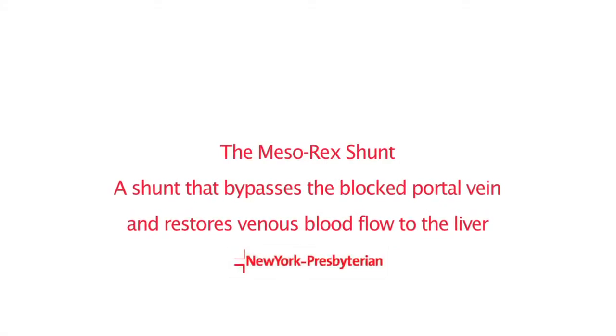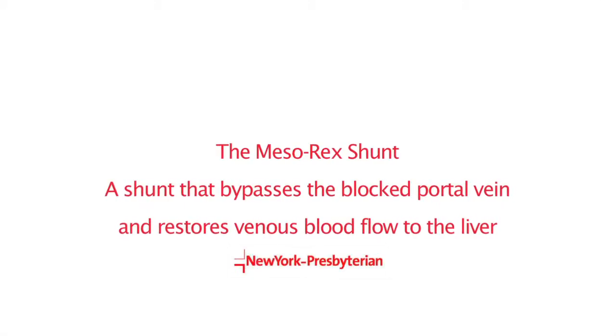One of the solutions is to do what's called a mesoportal shunt, known as the Rex shunt. The Rex shunt is the most complete solution to the problem. It requires finding the portal vein inside the liver, which is often still open in patients with portal vein thrombosis. The mesorex shunt connects the mesenteric vein to the portal vein inside the liver, accessing the left side of the portal vein at an area called the Rex diverticulum — which is why it's called the mesorex shunt.